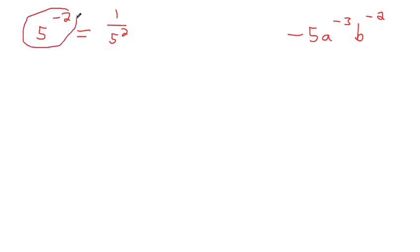It's got a negative attitude, so send it downstairs, go to your room. Then you can simplify: 5 squared just makes 25, so 5 to the negative second is 1 out of 25.